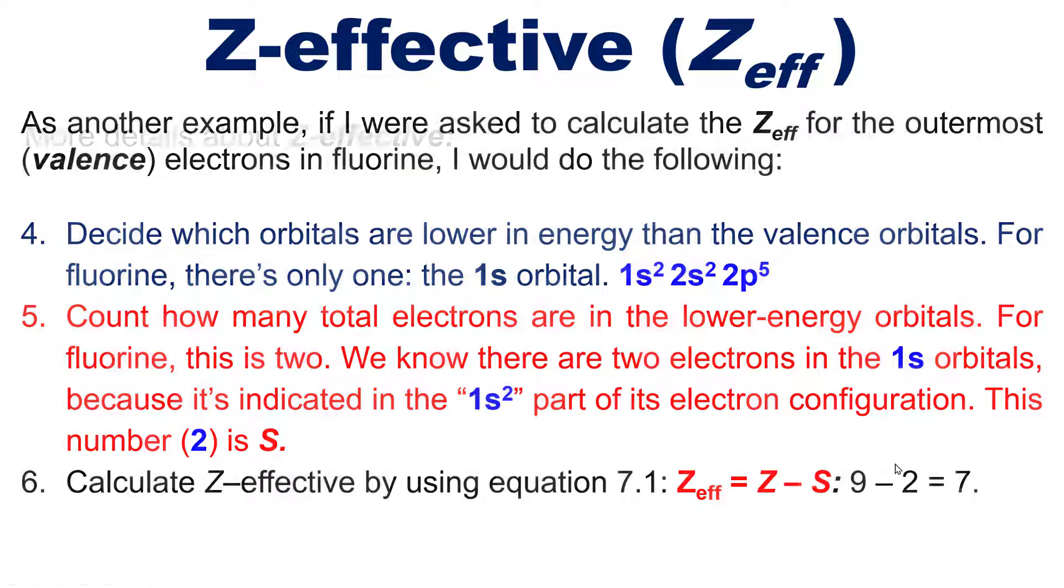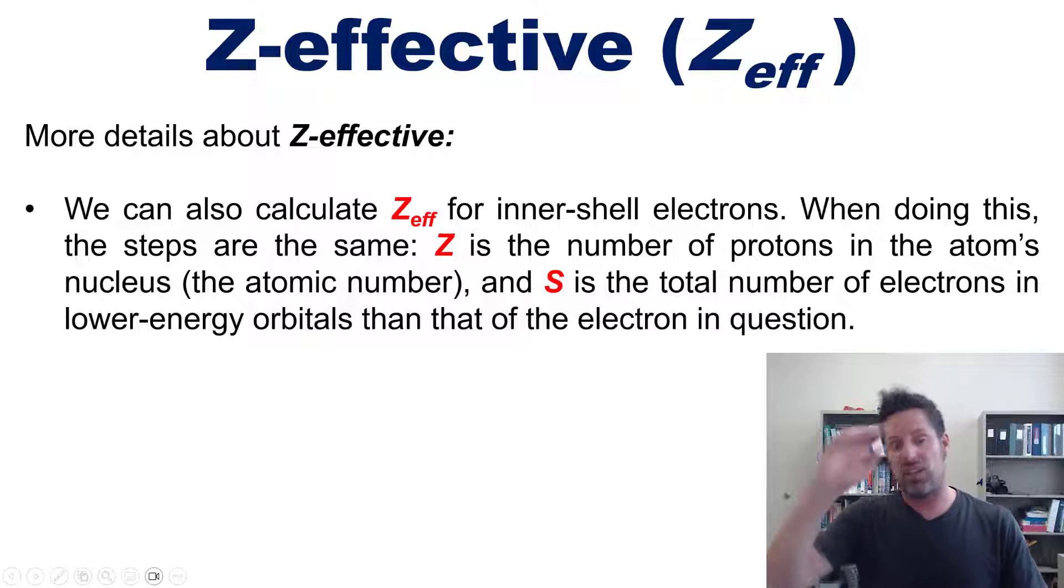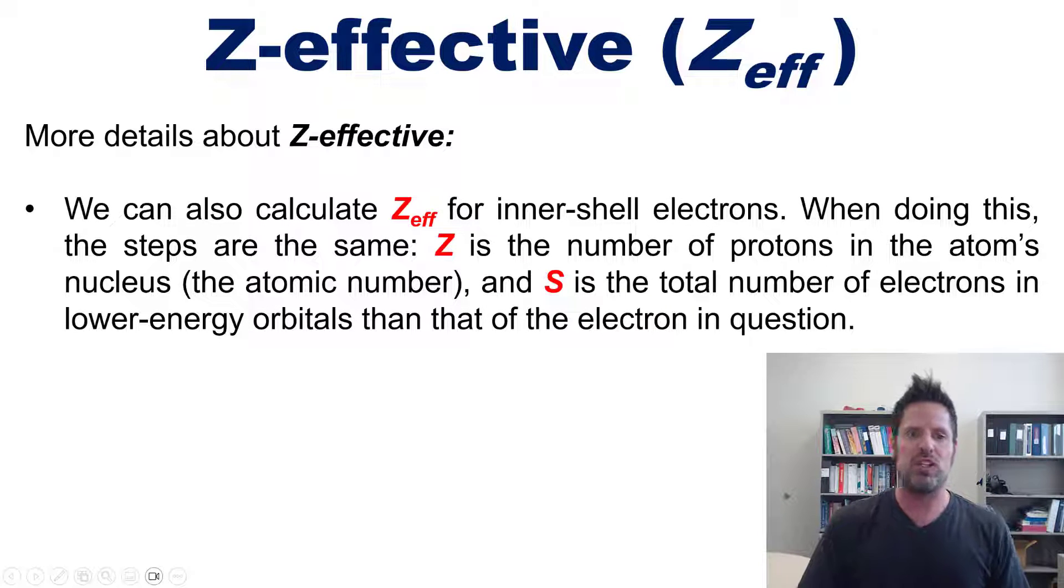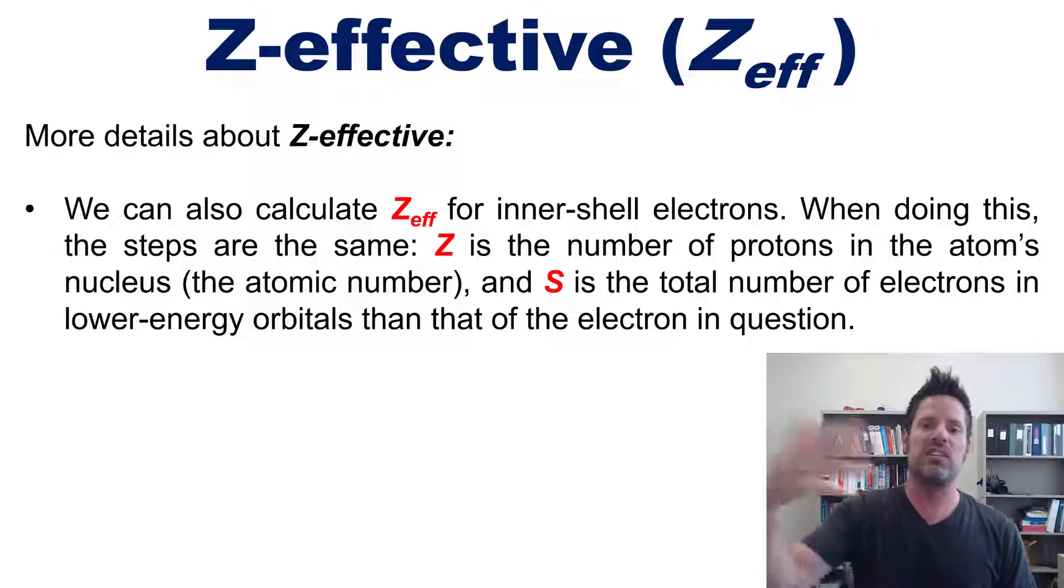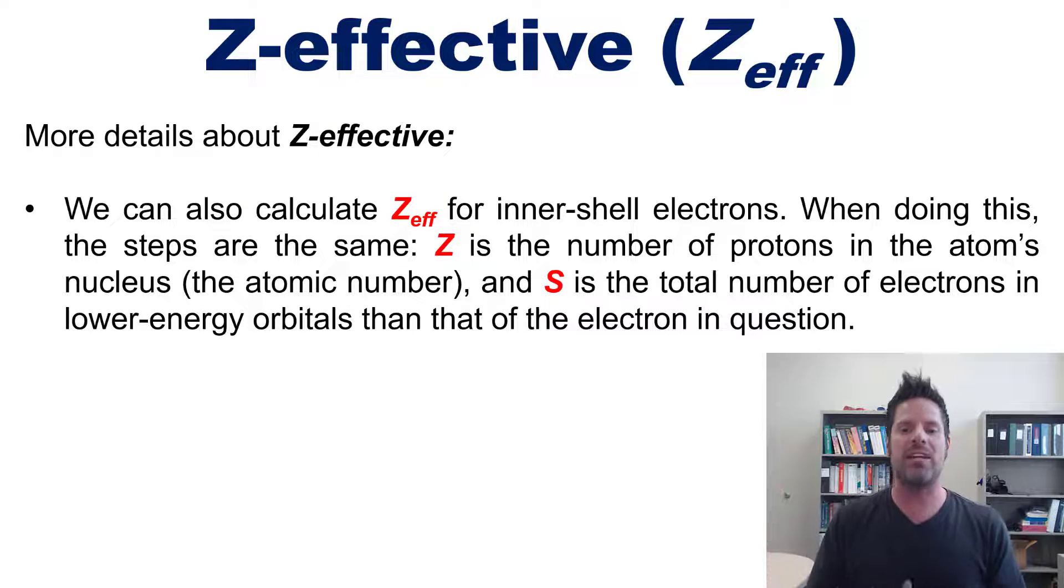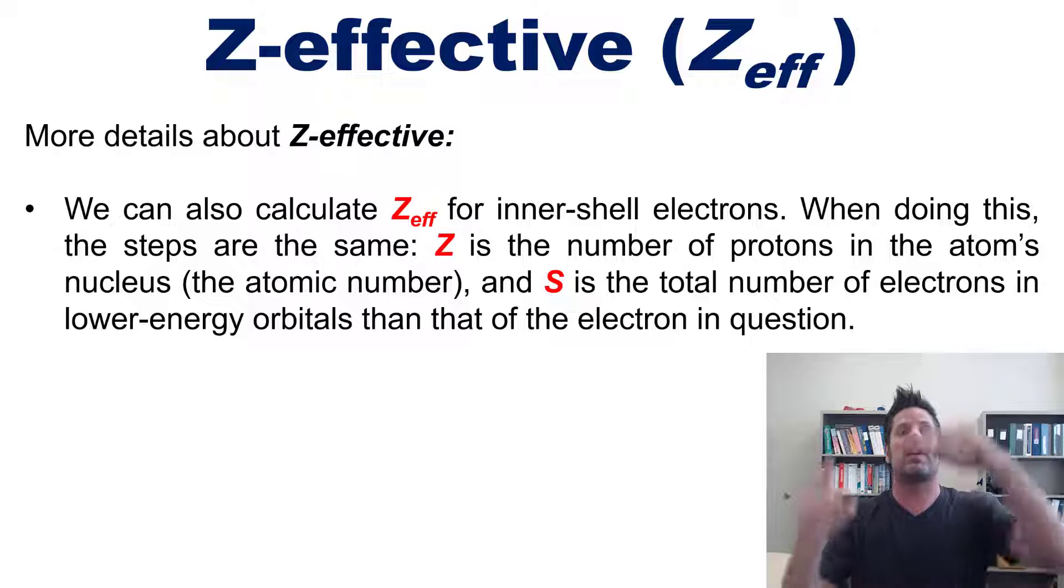We can also calculate Z-eff for inner shell electrons. When doing this, the steps are exactly the same. Z is equal to that element's number of protons (its atomic number), and S is equal to the total number of electrons that are in lower energy orbitals than the energy level for the electrons you're calculating for.